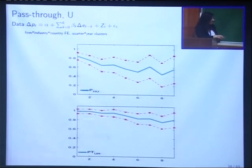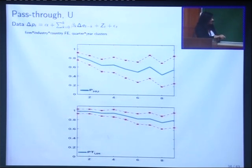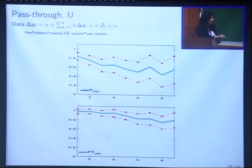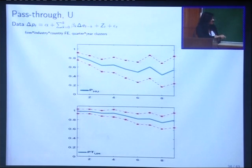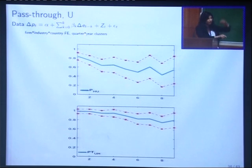If you do the same thing for the import side — and by the way, this is not the model, this is the data — the data again says that if I look at imports coming from the U.S. into the Colombian country, pass-through into the Colombian peso is 100% in the beginning, and it comes down. So this is a very specific testable prediction: all pass-throughs start very high, and then come down somewhat.